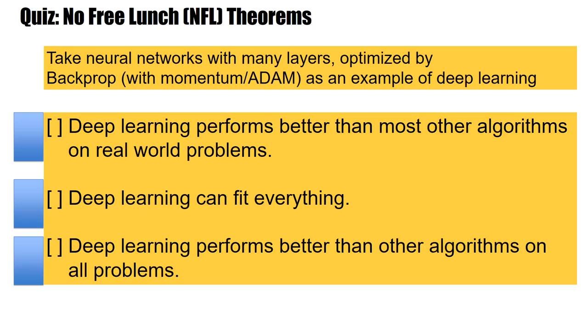Now, let's apply this. Let's take a neural network with many layers, a deep network. Suppose you optimize it with backprop. You can use a momentum term or the ADAM optimizer. And let's take this as an example of deep learning.